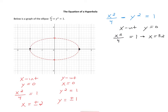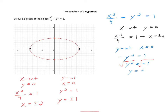But what about the y-intercepts? To find those, you let x equal 0. The remaining equation becomes negative y squared is equal to 1. If you divide both sides by negative 1 and take the square root, you get y equals plus or minus the square root of negative 1. This is the real xy plane, but that's an imaginary number, meaning you can't graph this point. In fact, if you type this into your calculator, it would say error. So there are no y-intercepts on this equation.